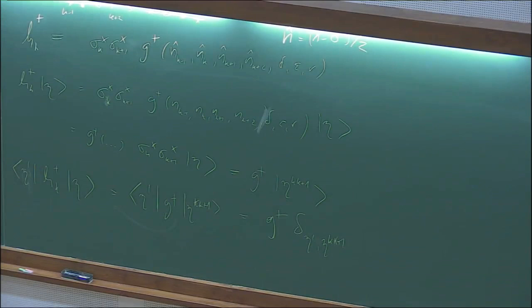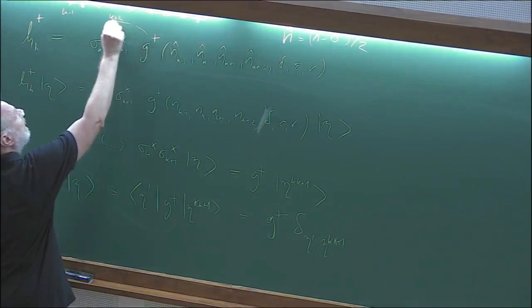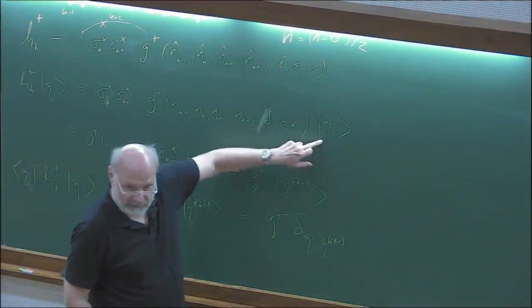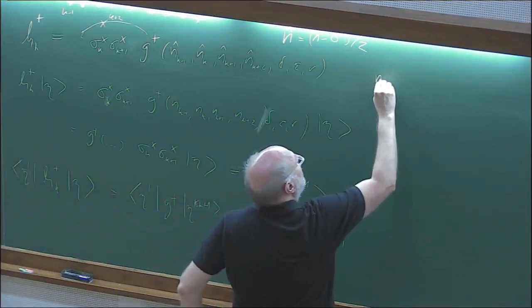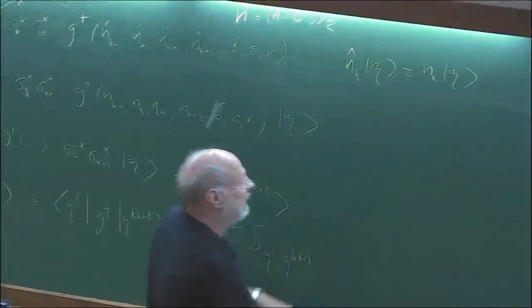Note that G+ and sigma_X do not commute in general, so you cannot rearrange them freely. However, once you apply G+ to the configuration vector eta, it becomes a number—because eta is an eigenstate of the diagonal operators N_K. Since it's now a number and not an operator, you can pull it through. This is the key point that makes the construction work.